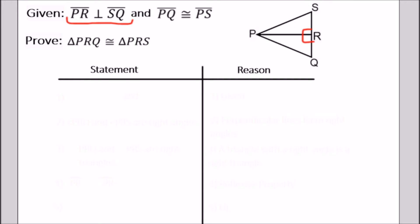For the second part of the givens, we have PQ congruent to PS. So we can mark off these two line segments as congruent.